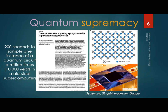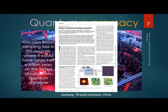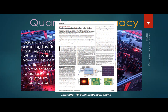There was another proof of quantum supremacy from China using a different technique called Gaussian boson sampling. It also takes about 200 seconds to simulate an instance of the state vector, but would take a billion years on the fastest classical non-quantum computer. They claim it's a billion times faster than the Google one — so there's a race to build even more powerful quantum computers by all the superpowers in the world.